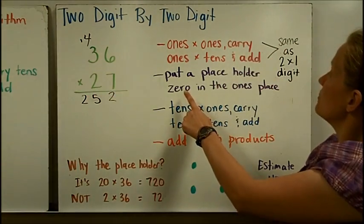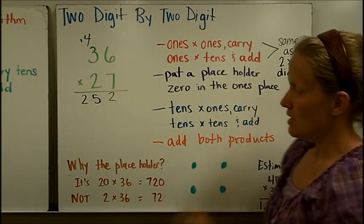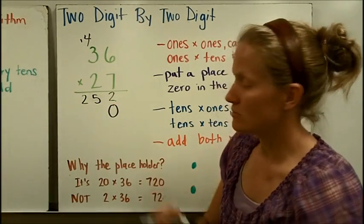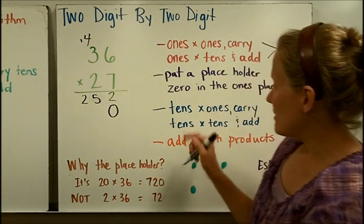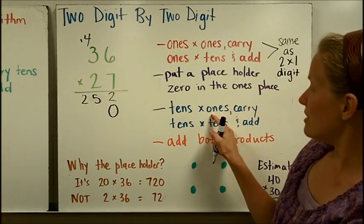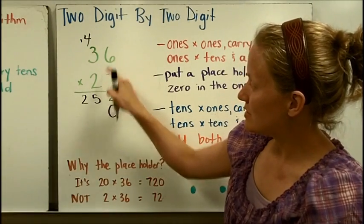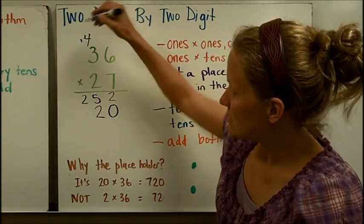Now I'm going to put a placeholder 0 in the ones place. So down here on my next row, I'm going to put that placeholder 0 in the ones place. We'll talk about it in a minute why we use that. Now I'm going to do tens times ones and carry. So I'm going to do 2 times 6 is 12. And I'm going to carry into the tens place.